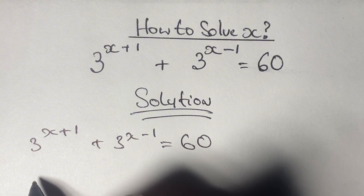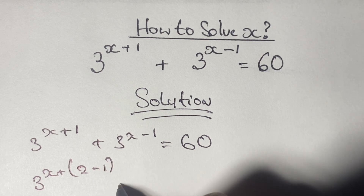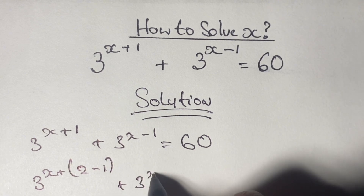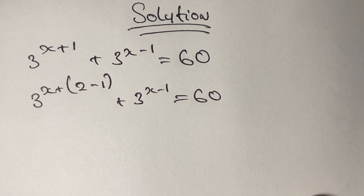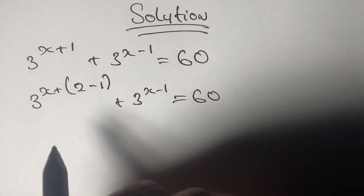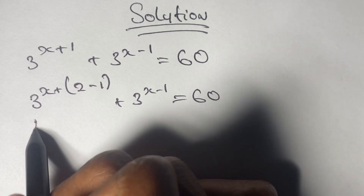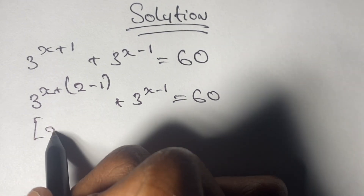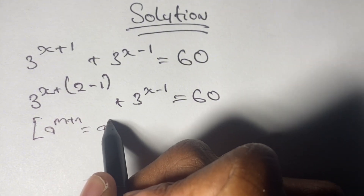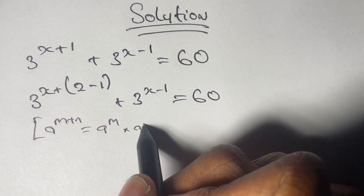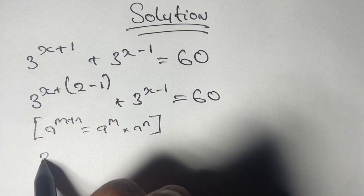Now here we have 3 to the power of x plus 1. We can simplify this as follows: we could write this as 3 to the power of x plus, in bracket, 2 minus 1, and then continue by having plus 3 to the power of x minus 1, is equal to 60. Doing this enables us to factor out our equation, as you'll see in just a bit. Using the laws of indices, the law states that if we have a to the power of m plus n, it's the same as having a to the power of m times a to the power of n.